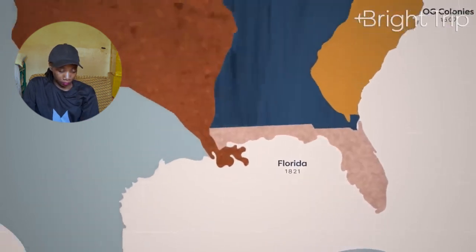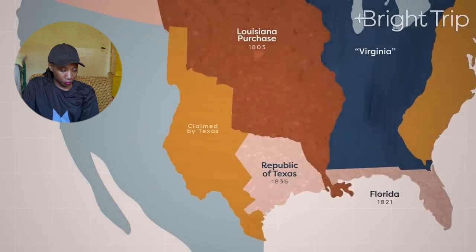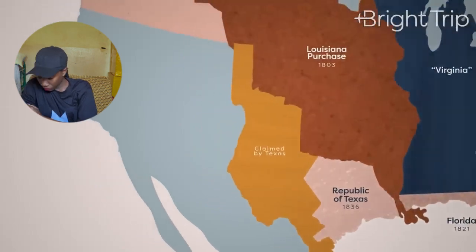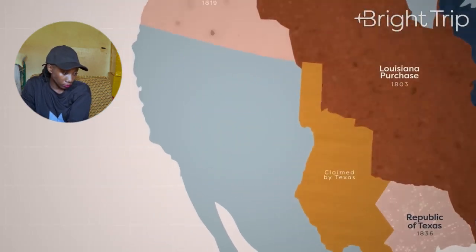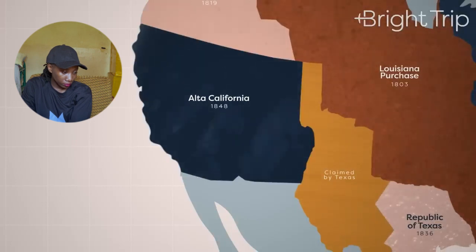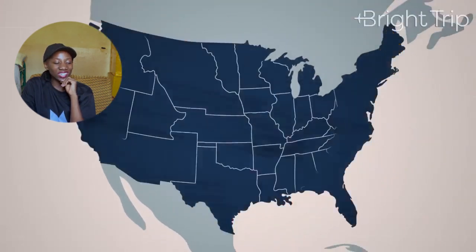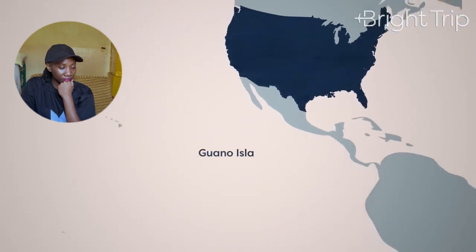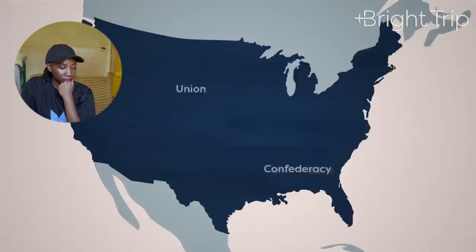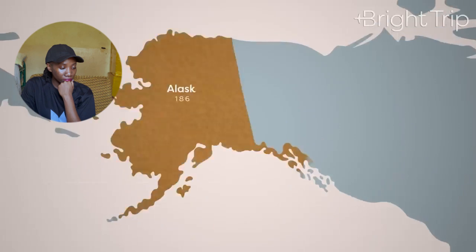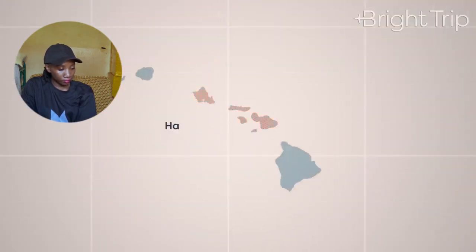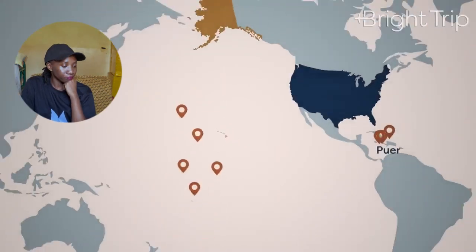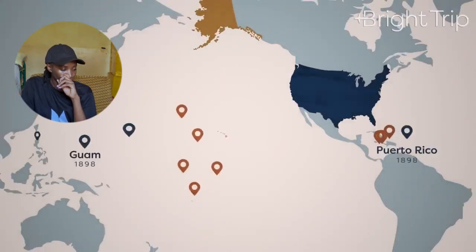Long story short, the Texans fought Mexico, became their own country for 10 years, then decided to cede back to the USA. In 1848 the Treaty of Guadalupe Hidalgo ended the Mexican-American War, and the Alta California area was ceded to the USA, completing the contiguous United States. The Guano Islands Act of the 1850s got us to claim small islands in the Pacific and Caribbean. The Civil War split us up for about 10 years, but then we reunited.